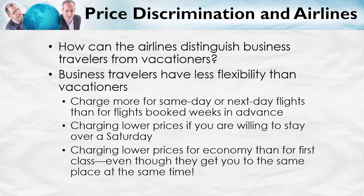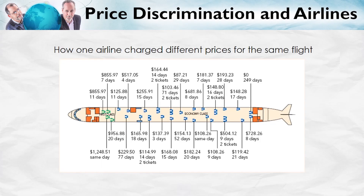Finally, first class, business class, and economy all get you to the same place at the same time, but first and business class are much more expensive. The airlines figure that anyone willing to pay extra for just a little more space and better food probably has a lot more money, or maybe their business is paying for the ticket — those customers won't be so sensitive to the price. When you put these and a whole bunch of other methods together, the airlines are remarkably adept at charging different people different prices for the same good.